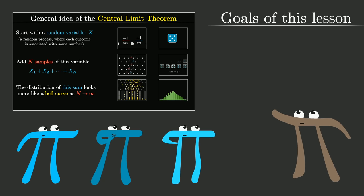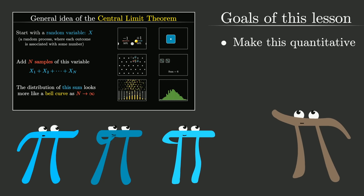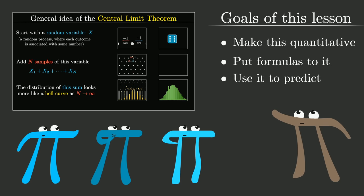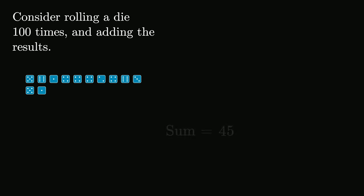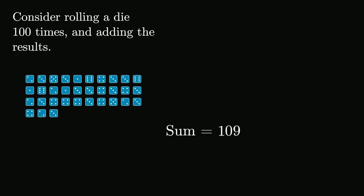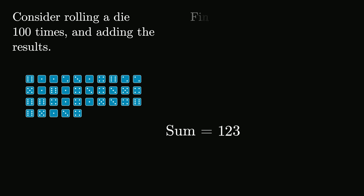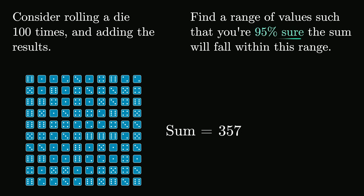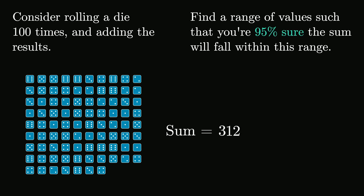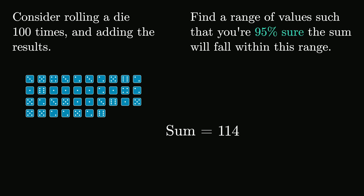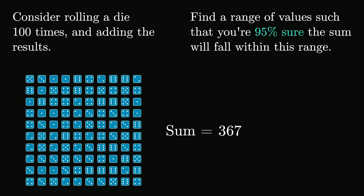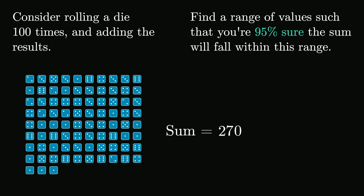Over the course of this lesson, our job is to make that statement more quantitative — put some numbers to it, put some formulas to it, show how you can use it to make predictions. Here's the kind of question I want you to be able to answer by the end of this video: Suppose you rolled a die 100 times and added together the results. Could you find a range of values such that you're 95% sure that the sum will fall within that range? You'll be able to answer this whether it's a fair die or a weighted die.